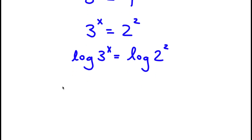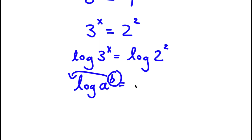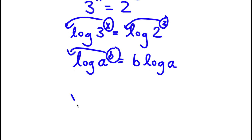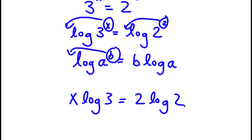Now, if I have something in the form log a to the power of b, I can simply move the exponent b to the front, so this equals b times log a. In this case, log 3 to the power of x — I can move x to the front — and log 2 to the power of 2 — I can move 2 to the front. So now I have x times log 3 is equal to 2 times log 2.